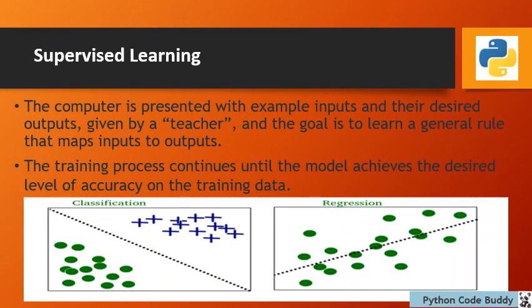Now we come to supervised learning. Supervised learning is where a computer is presented with example inputs and the desired outputs given by a teacher. The goal is to learn a general rule that maps inputs to outputs. Two examples of supervised machine learning are classification and regression.